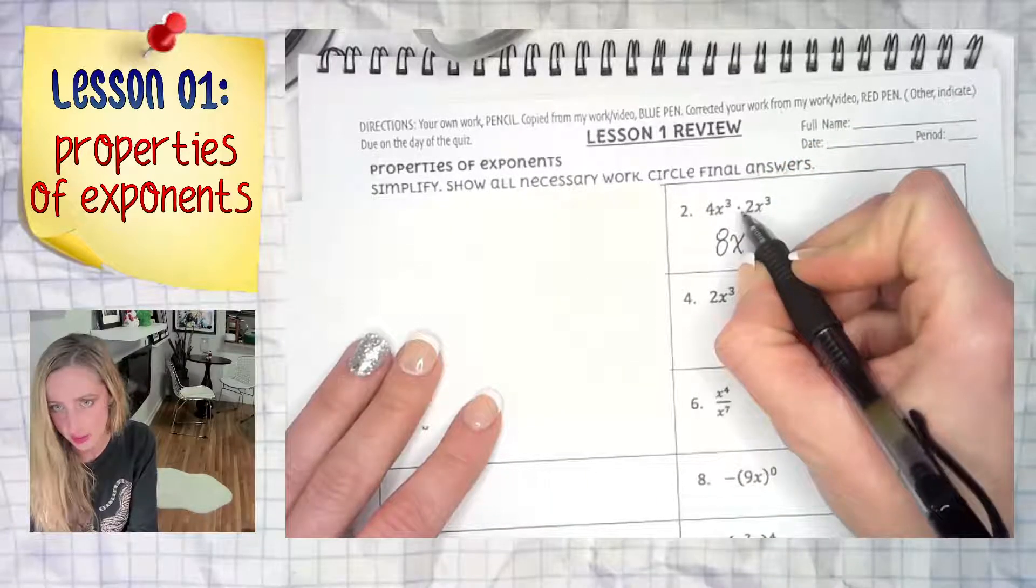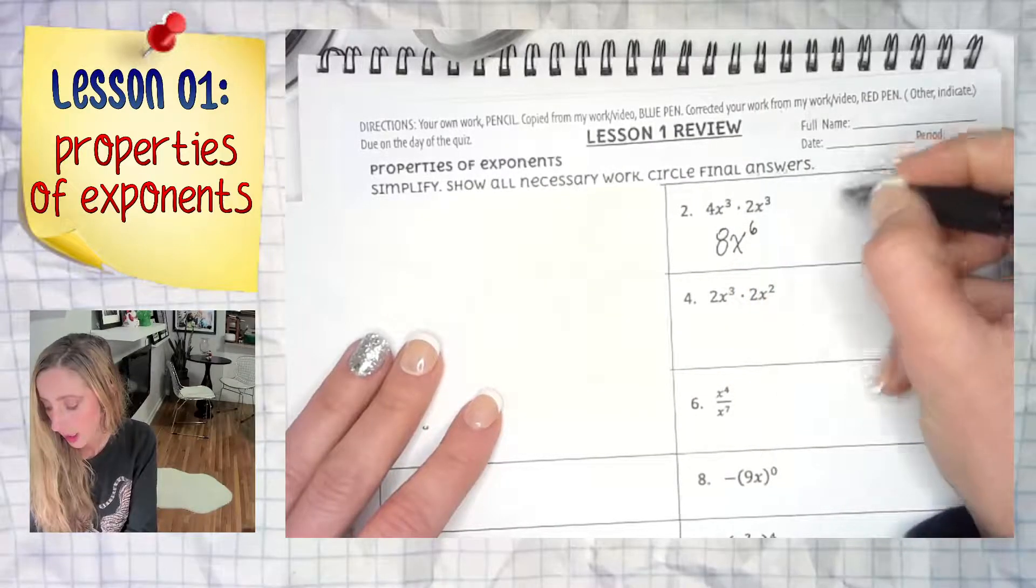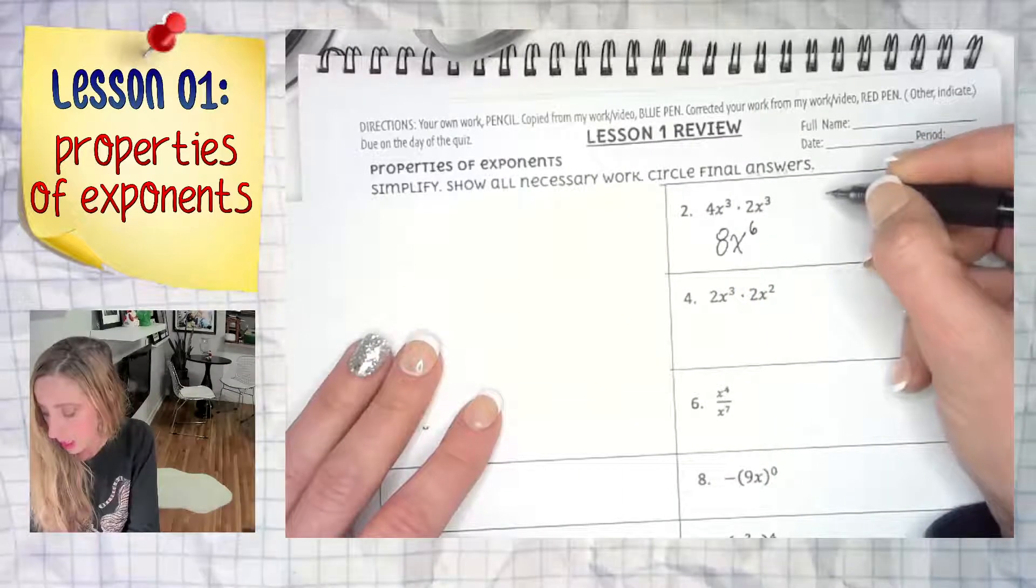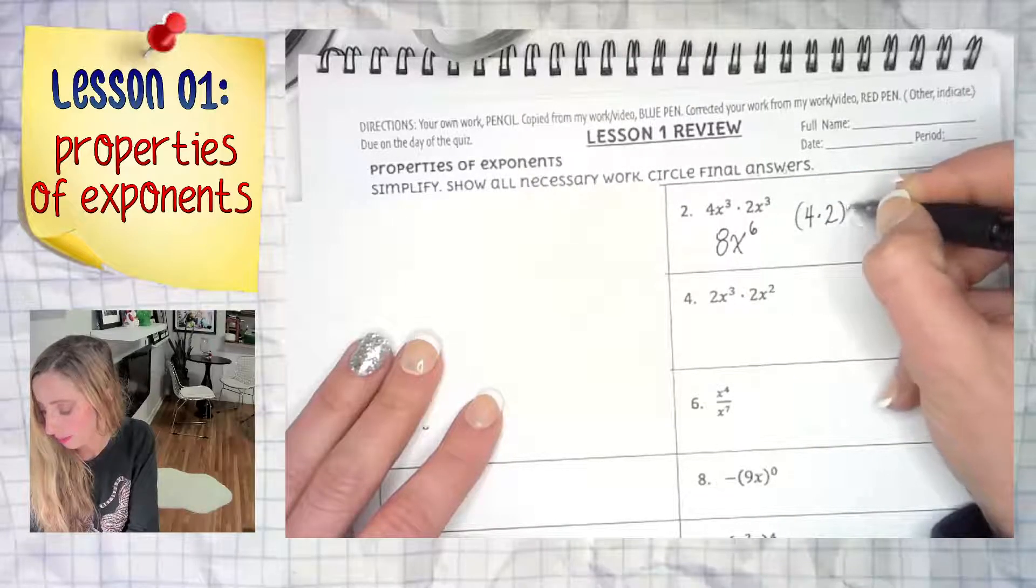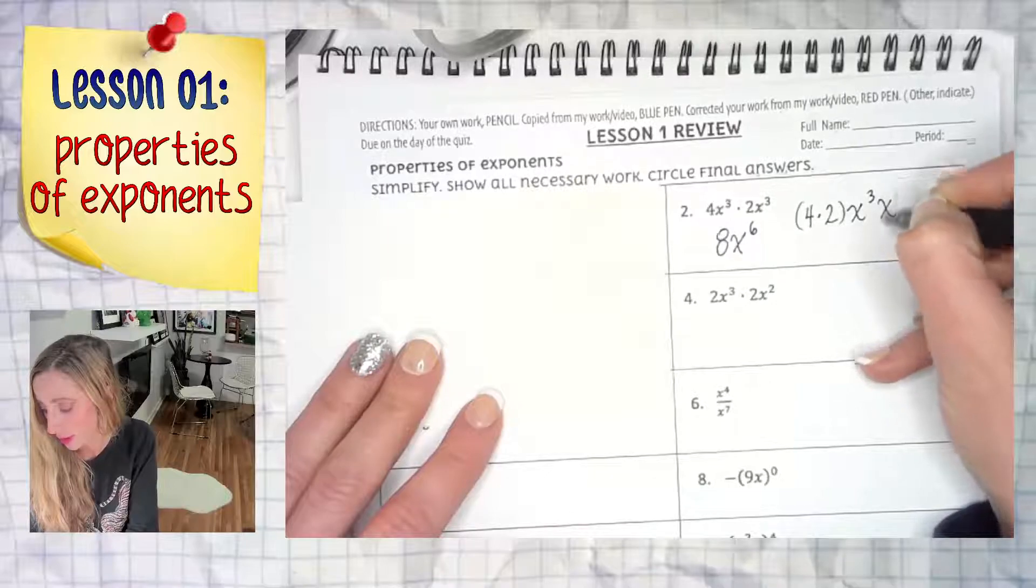First of all, that dot does not need to be there. It could be parentheses. It could be 4 times 2, and then x to the third, x to the third.